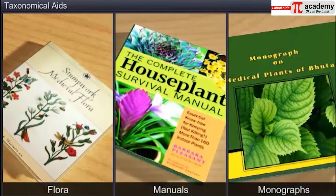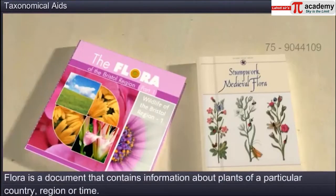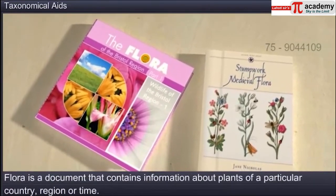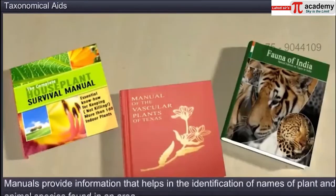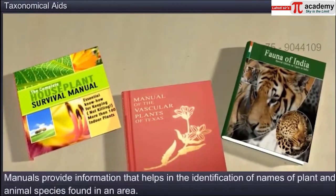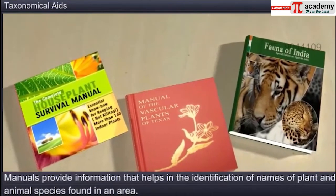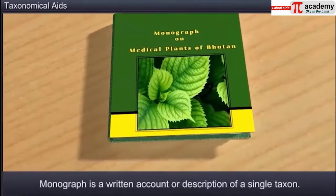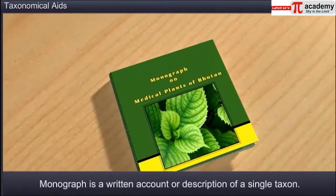Other taxonomical aids like flora, manuals and monographs are also used. A flora is a document that contains information about the plants of a particular country, region or time. Manuals provide information that helps in the identification of the names of plant and animal species found in a specific area. A monograph is a written account or description of a single taxon. It provides detailed information about a particular species and how it fits in with the overall taxonomy and classification.